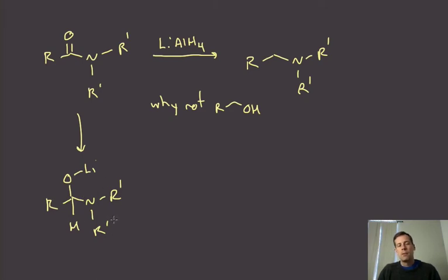But the problem with that is you're going to be spitting off an N minus and a nitrogen anion is really, really unstable. It's a very basic compound. So it's not very happy to act as a leaving group.